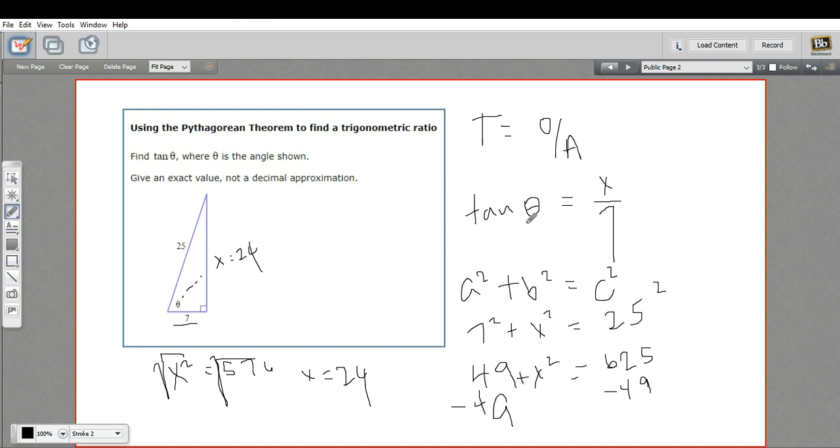So the tangent of theta is 24 sevenths. And that's all we have to do with that. So that's how to use the Pythagorean theorem to find a trigonometric ratio.